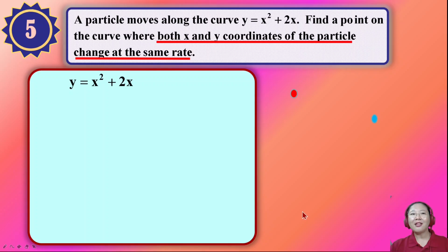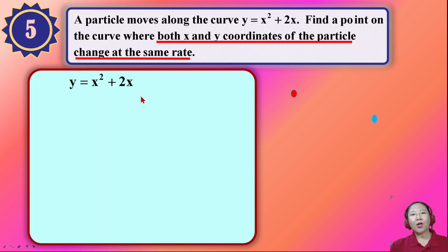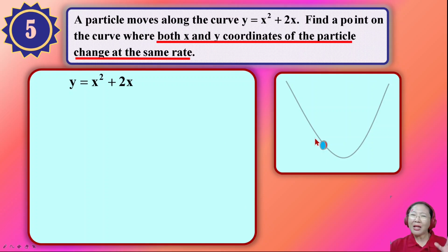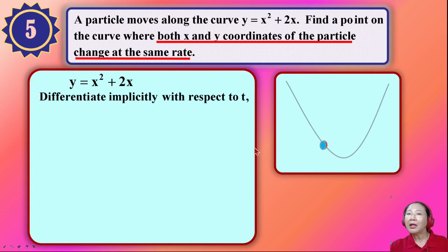According to question five, a particle moves along a curve. We need to find a point on the curve where both the x and y coordinates of the particle change at the same rate. You can imagine two particles moving toward each other and meeting at the point where they have the same rate of change — the same gradient. That is the basic concept.